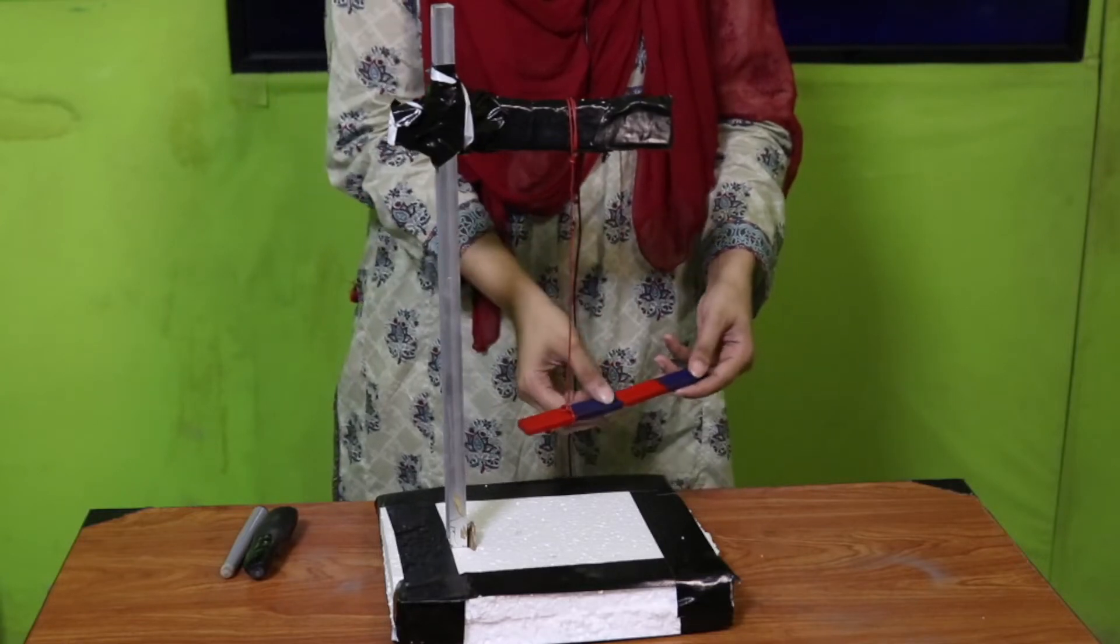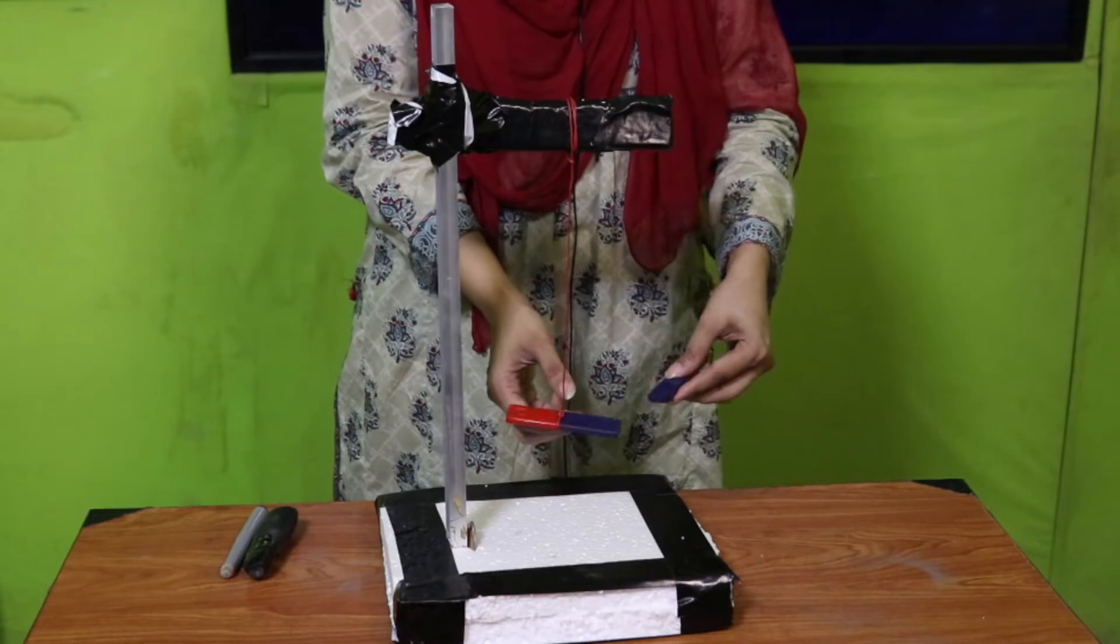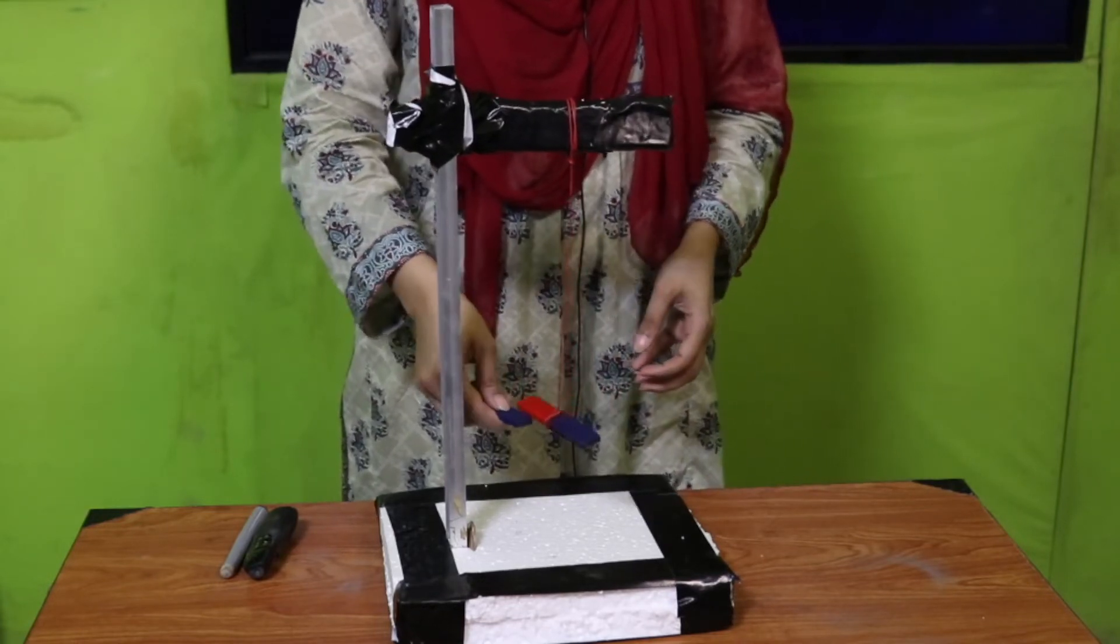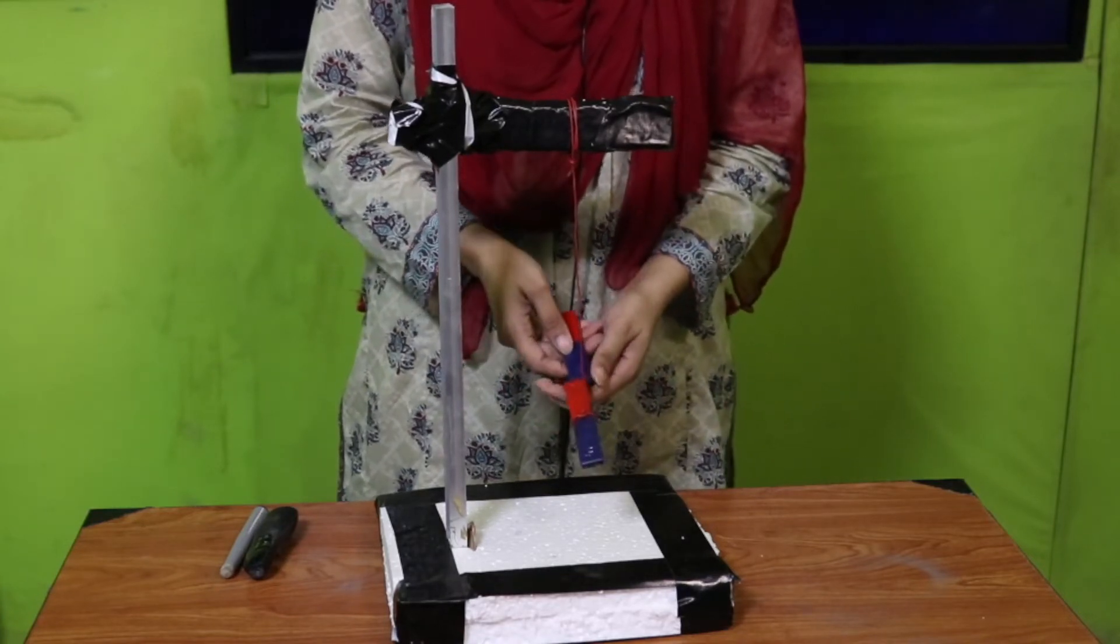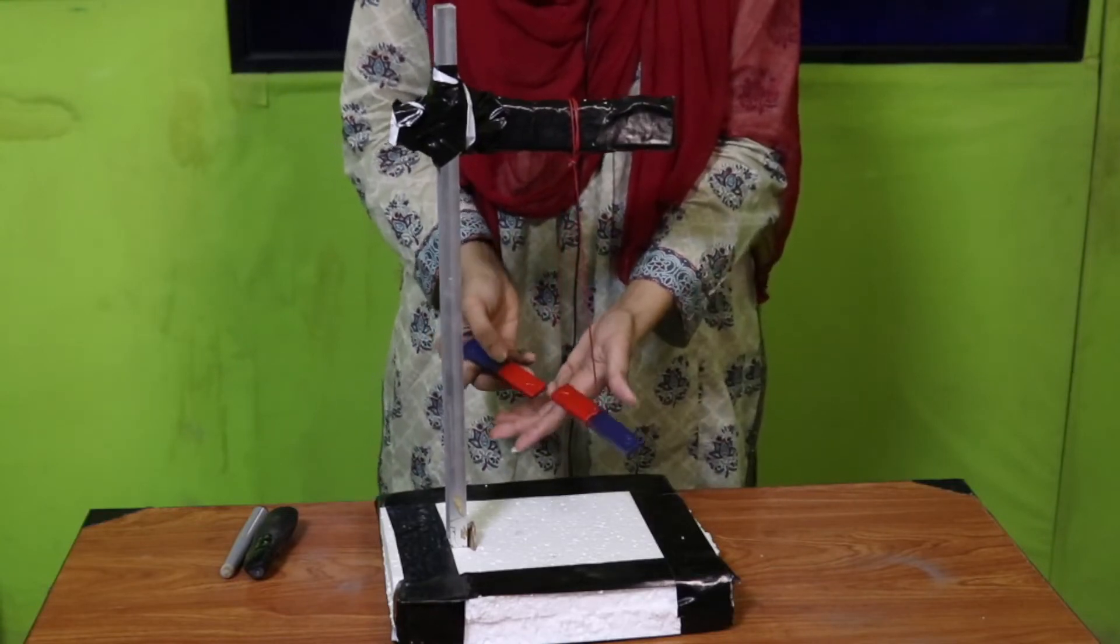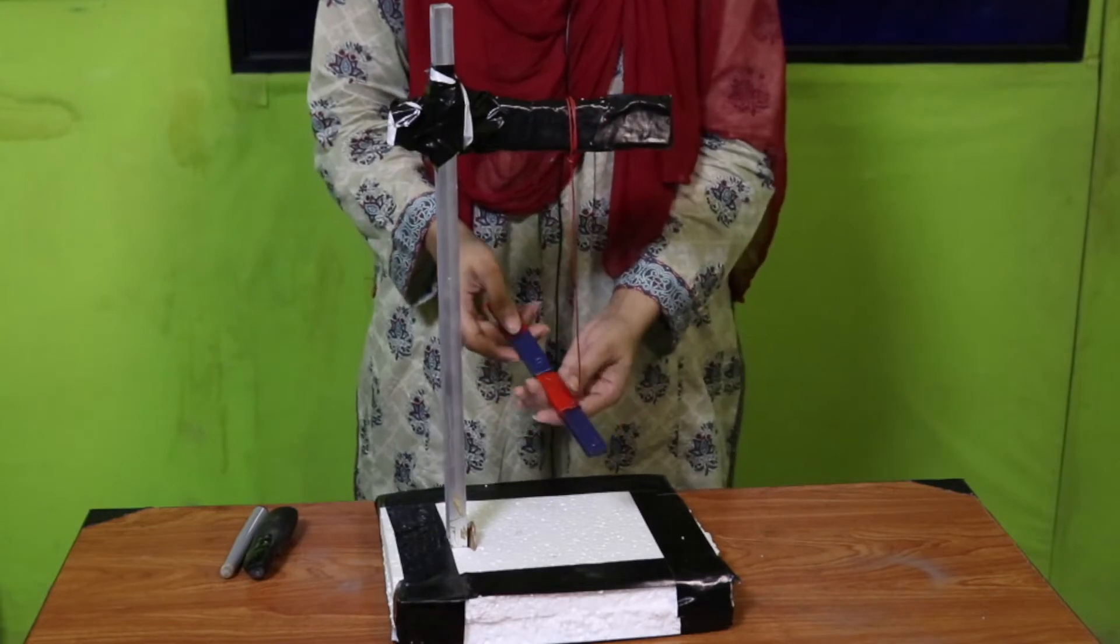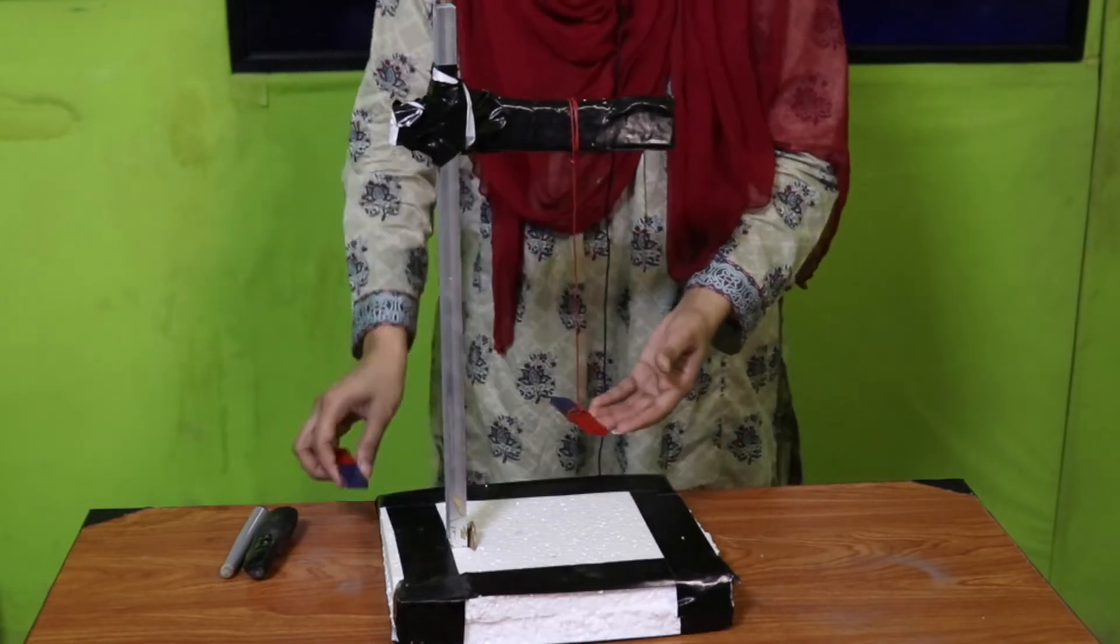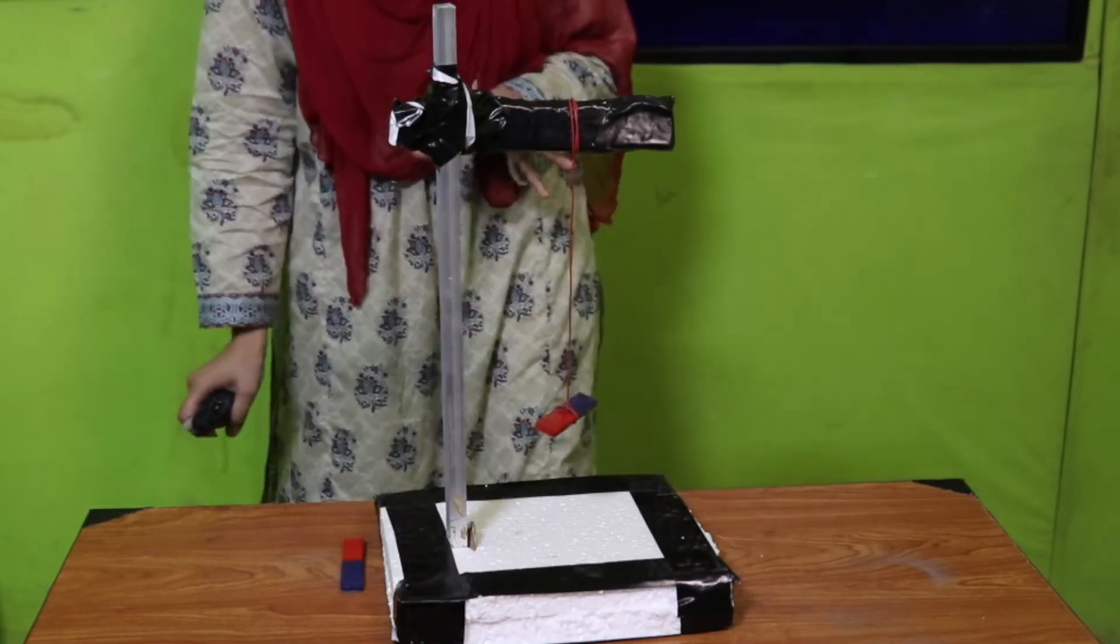Now I will bring north pole near south pole - again it attracted. If you want to see repulsion, bring south near south - they repel. When north pole comes near south pole it attracts. So like poles repel each other and opposite poles attract each other. My dear students, you must perform this experiment. You will enjoy it.